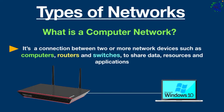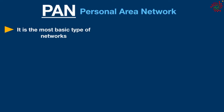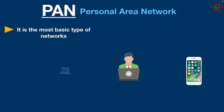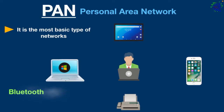The very first network type is PAN. PAN stands for Personal Area Network. It is the most basic type of network. PAN is typically centered around a single person in a particular location to connect devices such as mobile phones, laptops, and tablets. These devices connect to each other by wireless technologies like Bluetooth, infrared, and near field communication.